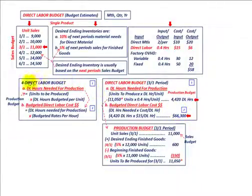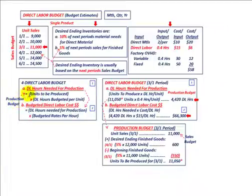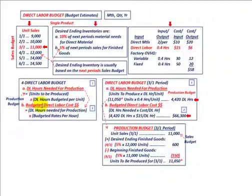To summarize: for a direct labor budget, we first determine direct labor hours needed for production by taking units to be produced from the production budget — which is based on the sales budget — times the direct labor hours budgeted per unit. Then we determine the budgeted direct labor cost by multiplying those hours by the budgeted rate per hour.